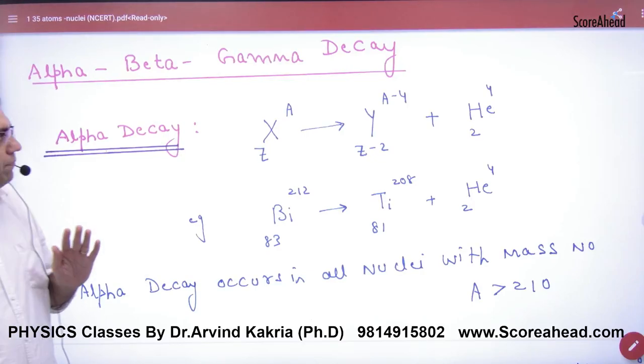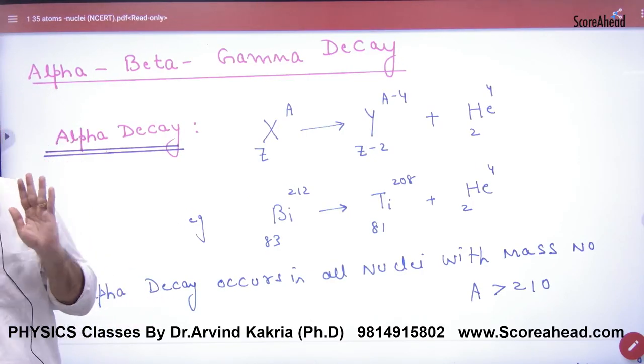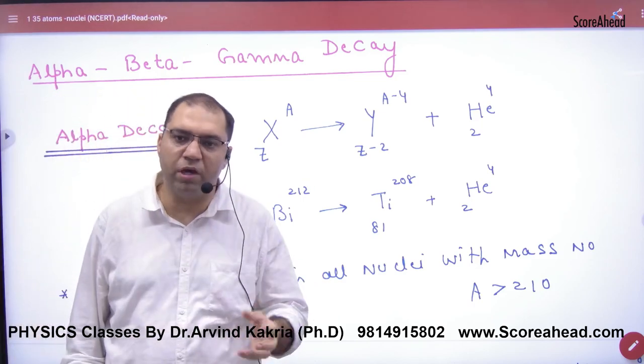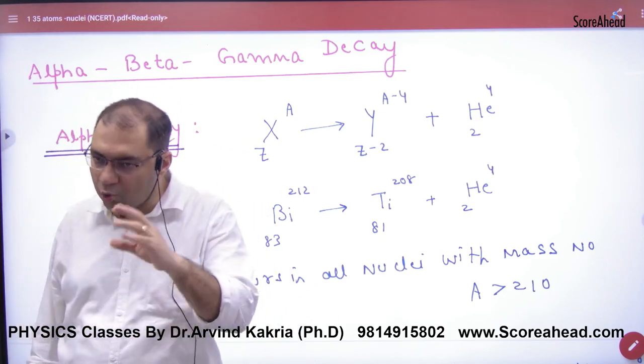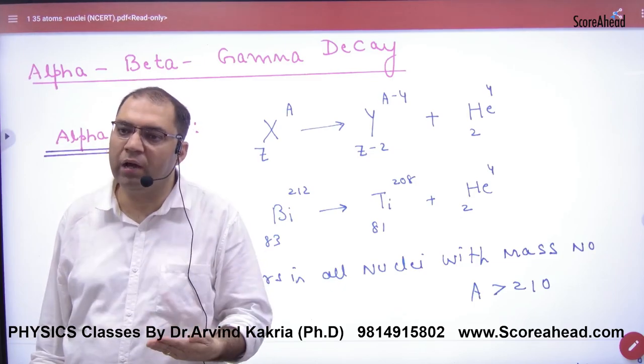Alpha, Beta, Gamma Decay. When is this? When an unstable nucleus is broken. Why is it broken? To make it stable. And why is it unstable?